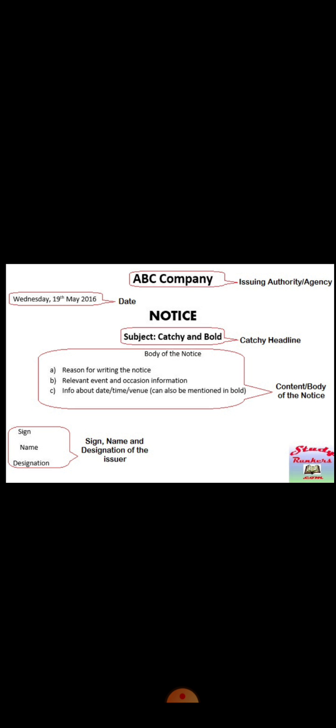Notice can be of different types — they can be about competitions, lost and found, excursions or tours, and many more. The language will differ depending on the type, but the format will remain the same. For the heading, instead of simply writing 'Dance Competition,' make it eye-catching like 'Let's Dance' or 'Dance APCS.' Think of an attractive heading that will draw people to read your notice. If you have any confusion or questions, you may ask. I will give you two questions to do in your copy and send them to your group.